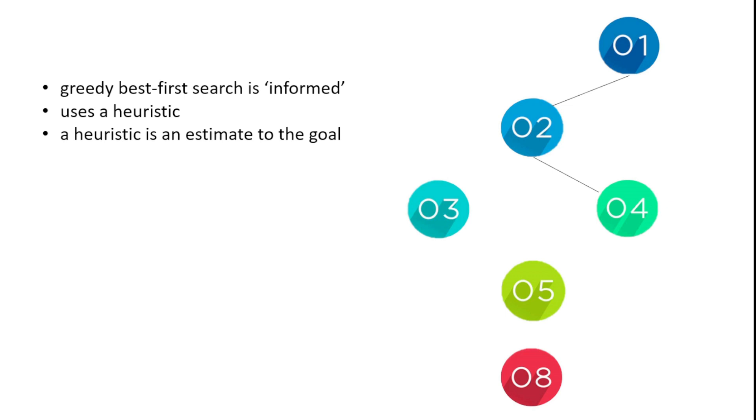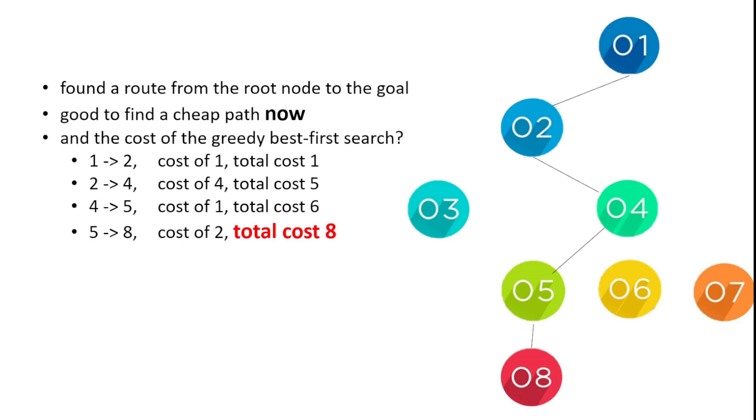Now we can see node 5 has an estimate of 1, node 6 has an estimate of 2, and node 7 has an estimate of 3. So we're going to go 1, 2, 4, 5, and then to our goal of 8. That's the path that we chose.